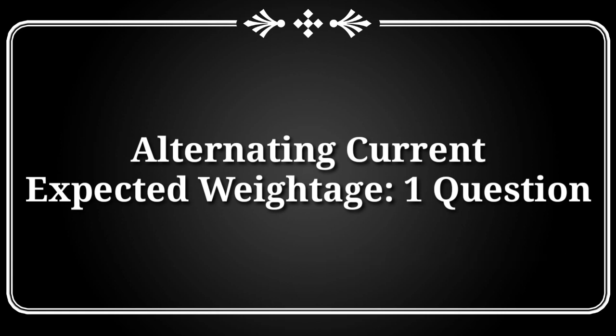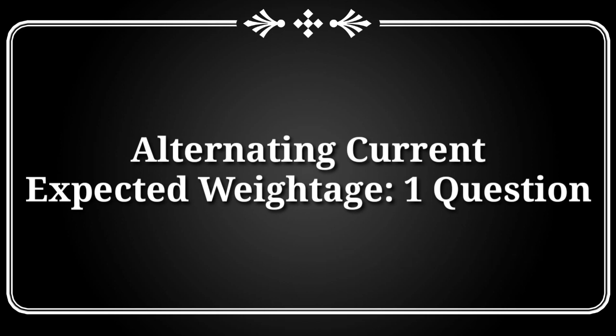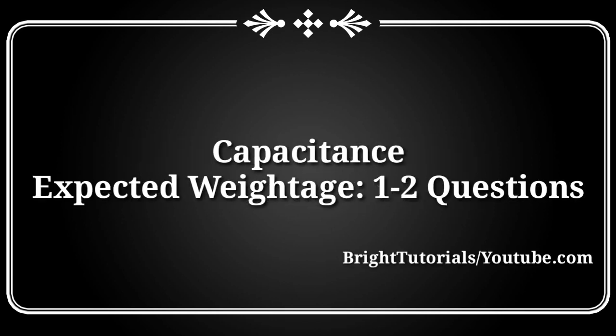After that, start with the chapter Alternating Current (AC). The weightage of this chapter is one mark. The important topics are transformer, Q factor, resonating frequency, and LCR series — meaning Xc, XL, and Z.